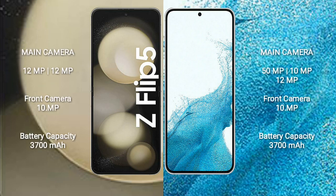The Samsung Galaxy Z Flip 5 has a rear dual camera setup of 12MP plus 12MP, and a front camera of 10MP. The Samsung Galaxy S22 5G has a rear triple camera setup of 50MP plus 10MP plus 12MP, and a front camera of 10MP.